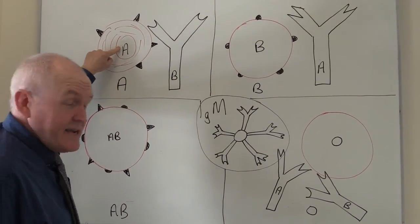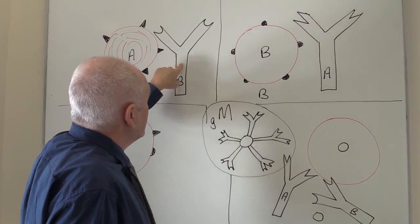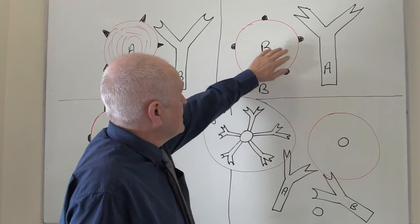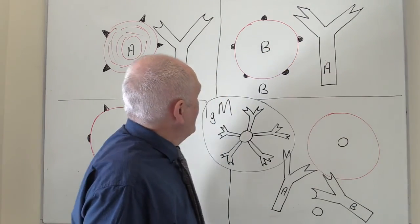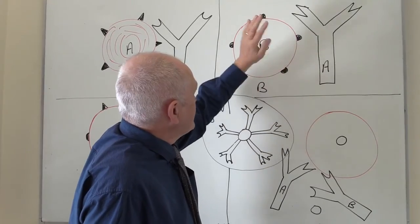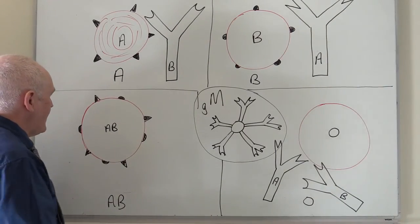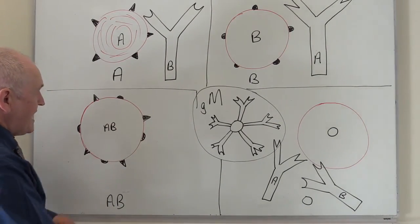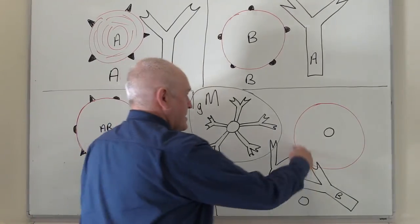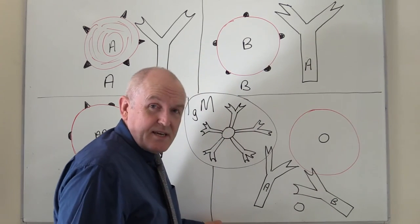That is what determines the four main blood groups under the ABO system. Group A: A antigens on red cells, anti-B antibodies in plasma. Group B: B antigens on red cells, anti-A antibodies in plasma. Group AB: A and B antigens on red cells, no antibodies in plasma. Group O: no antigens on red cells, but both A and B antibodies in the plasma.